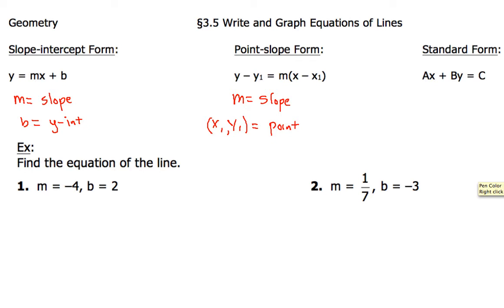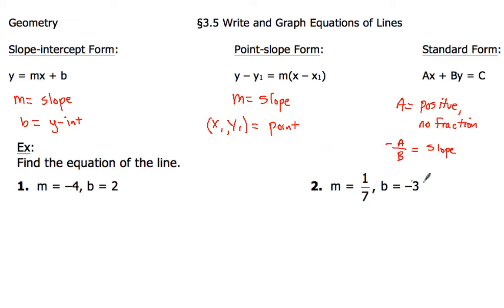Our last type of form is called standard form, and that's ax plus by equals c. Now there are a couple of things about the letter a: a has to be positive — it must be positive and cannot be a fraction. Here's a little tidbit that some of you may be aware of: if you take negative a over b, that will give you the slope of that line.